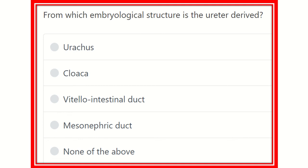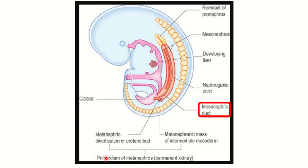Hello everyone, welcome to another question and answer session. The question is: from which embryological structure is the ureter derived? The options are: urachus, cloaca, vitelo-intestinal duct, mesonephric duct, and none of the above.